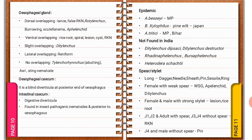Regarding different types of stylet: the long stylet is present in dagger nematode, needle nematode, sheath nematode, pin nematode, and ring nematode, as they are all ectoparasites. The female with a weak spear is the wheat seed gall nematode, Aphelenchoides, and Ditylenchus female. A male with strong stylet is present in lesion nematode, rice root nematode. In Meloidogyne: J1 and J2 and adult have a spear, while J3 and J4 do not have a spear — this is a repeated exam question.